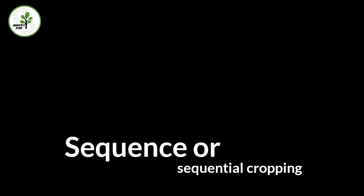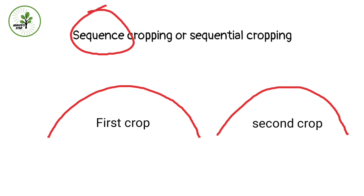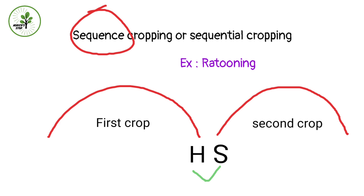The third system is sequential cropping. Sowing of the second crop and harvesting of the first crop may be done simultaneously or in quick succession — everything happens in sequence, one after the other. There is no overlapping, which is why it is called a non-overlapping cropping system. For example, chili is sown just after digging of potato. Ratoni is also classified under sequential cropping.